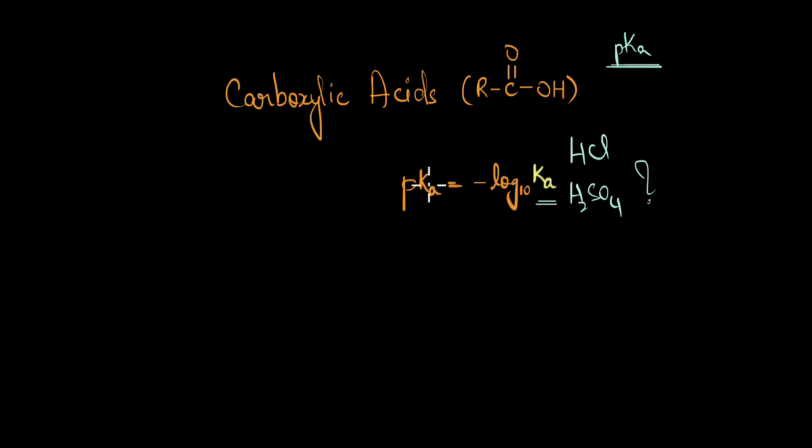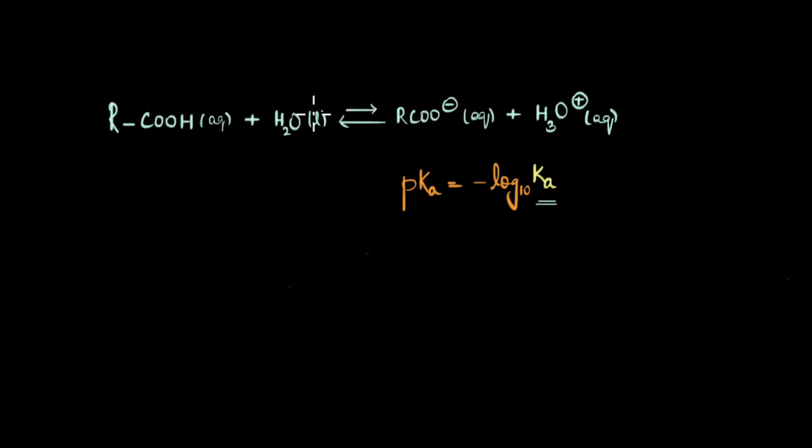So to figure out the pKa value of our carboxylic acids, let's look at the dissociation of acid in water. In water, carboxylic acid dissociates to give carboxylate ion and H3O+. As you can see, this is an equilibrium reaction.